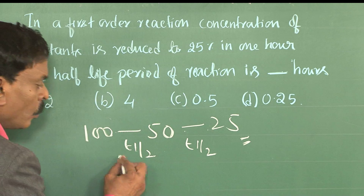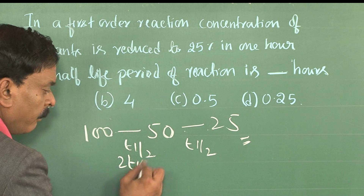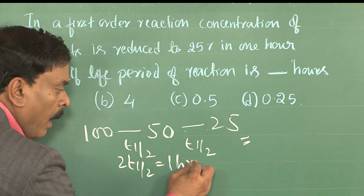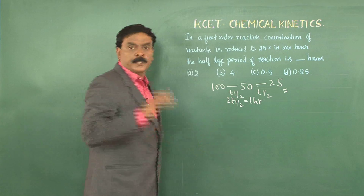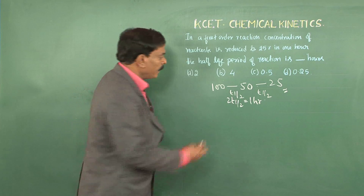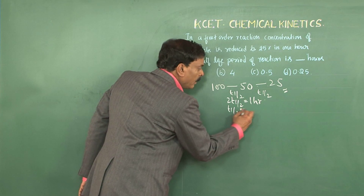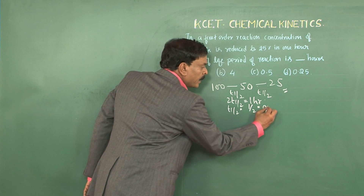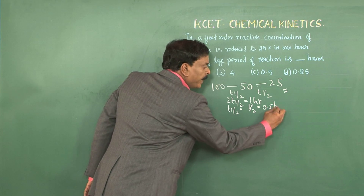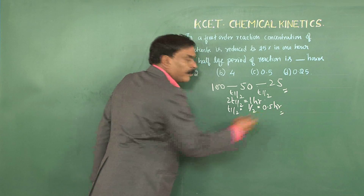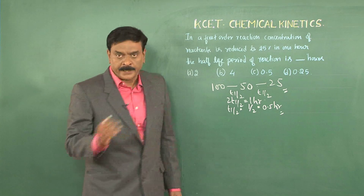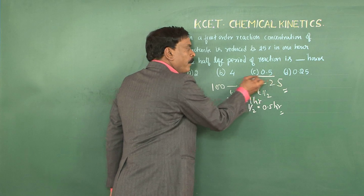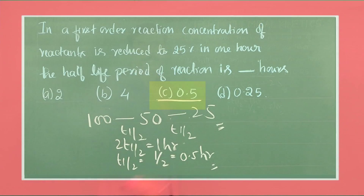In other words, 2 × t½ = 1 hour. Therefore, the half-life period = 1/2 = 0.5 hours. Hence the correct answer is 0.5.